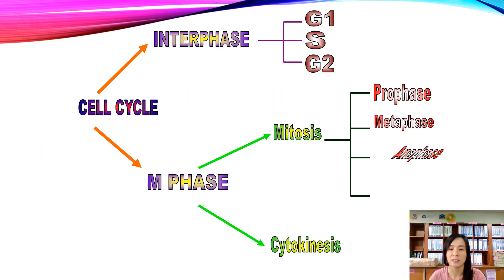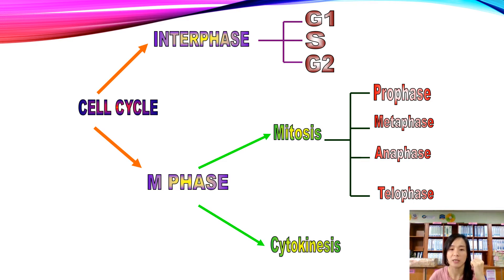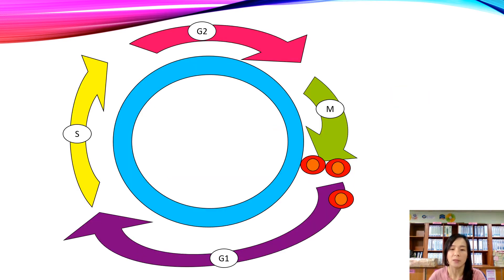The four phases of mitosis are prophase, metaphase, anaphase, and telophase. Today we will only focus on interphase, which includes G1, S, and G2 — we are going to see what happens during each phase. M-phase with mitosis and cytokinesis will be covered in the next lesson.